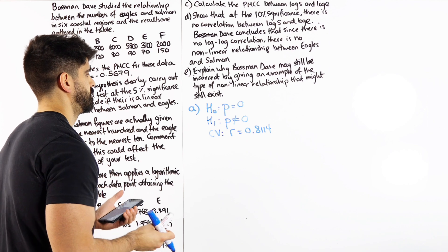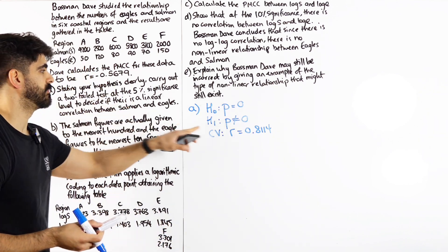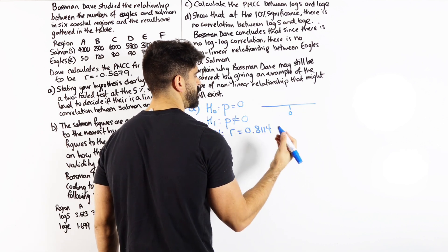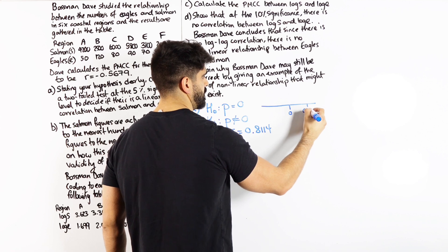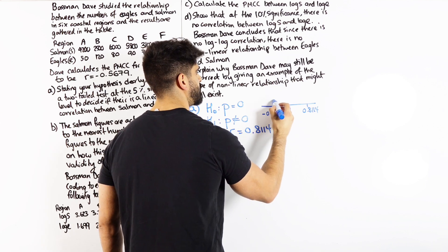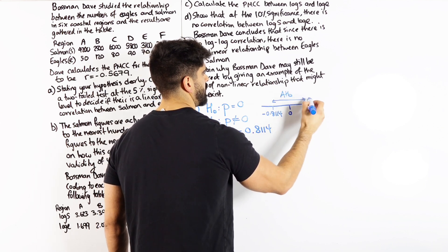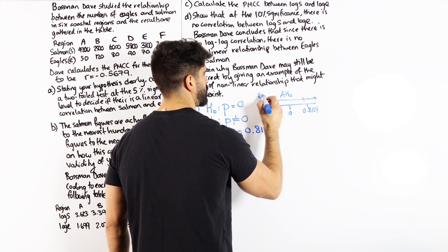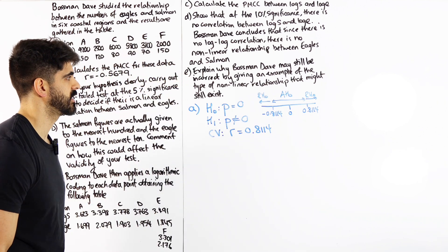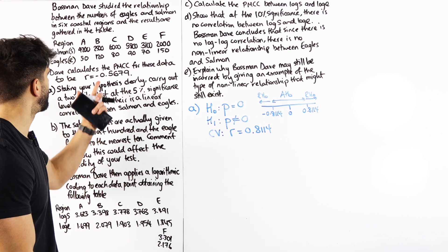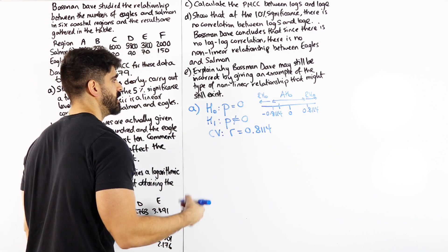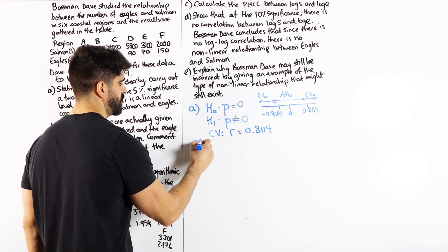Now, what's my critical region then? So if I show you guys on a number line, you can always use a number line to help you. 0 is no correlation. We have the 0.8114 on the positive side and the negative. We're saying anything between here, you would accept H0. And everything outside of there, they're very extreme, you would reject H0. Because our sample size is very small, right? So we need really strong R values in order to reject H0. Now, our minus 0.5679 is over here. That's in the acceptance region.